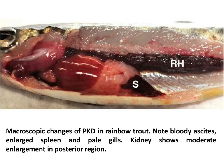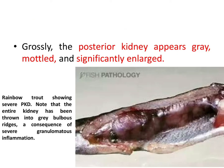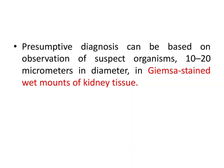These are the macroscopic changes of PKD in rainbow trout. Note the bloody ascites and enlarged spleen and pale gills. The kidney shows moderate enlargement in the posterior region. Grossly, the posterior kidney appears grey, mottled, and significantly enlarged. This rainbow trout shows severe PKD — note that the entire kidney has been thrown into grey bulbous ridges as a consequence of severe granulomatous inflammation.